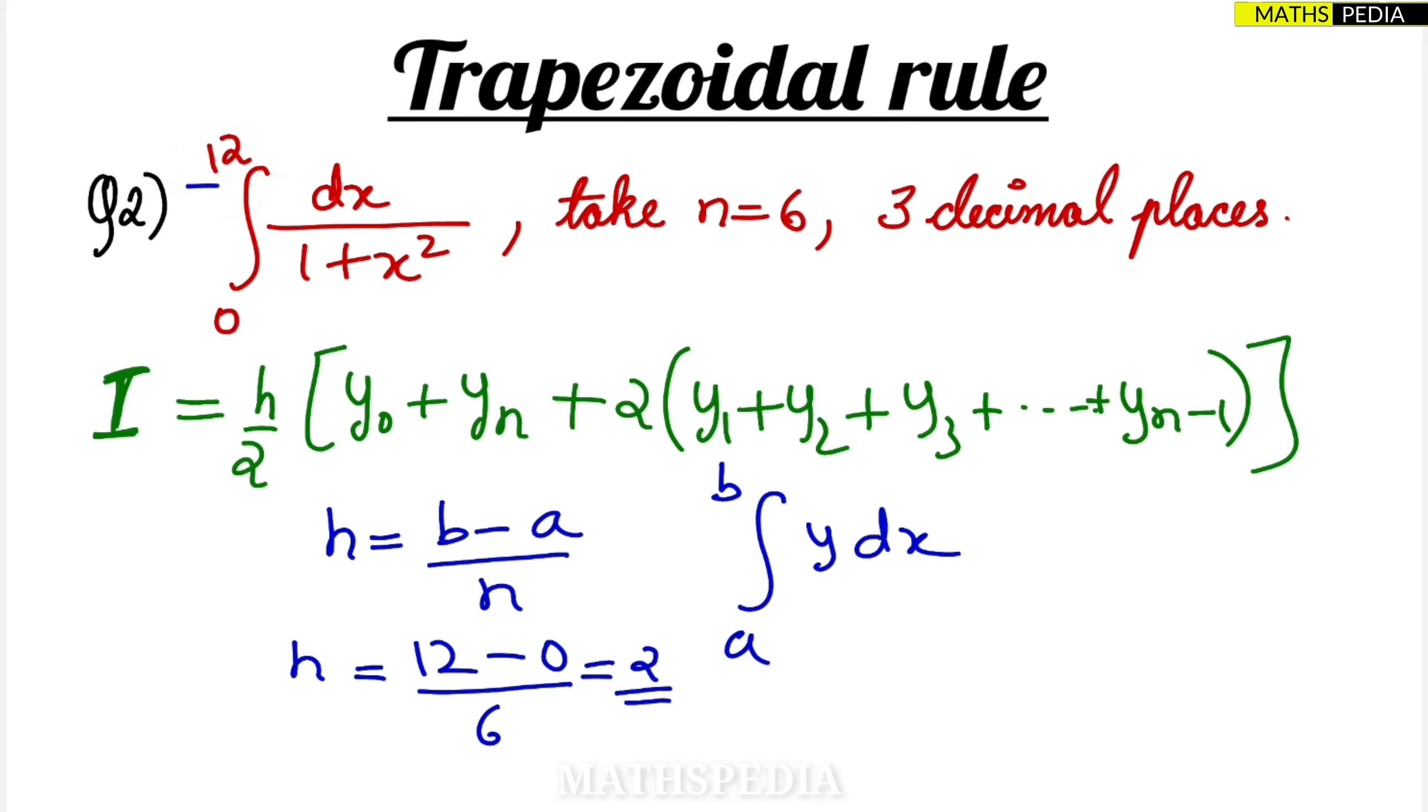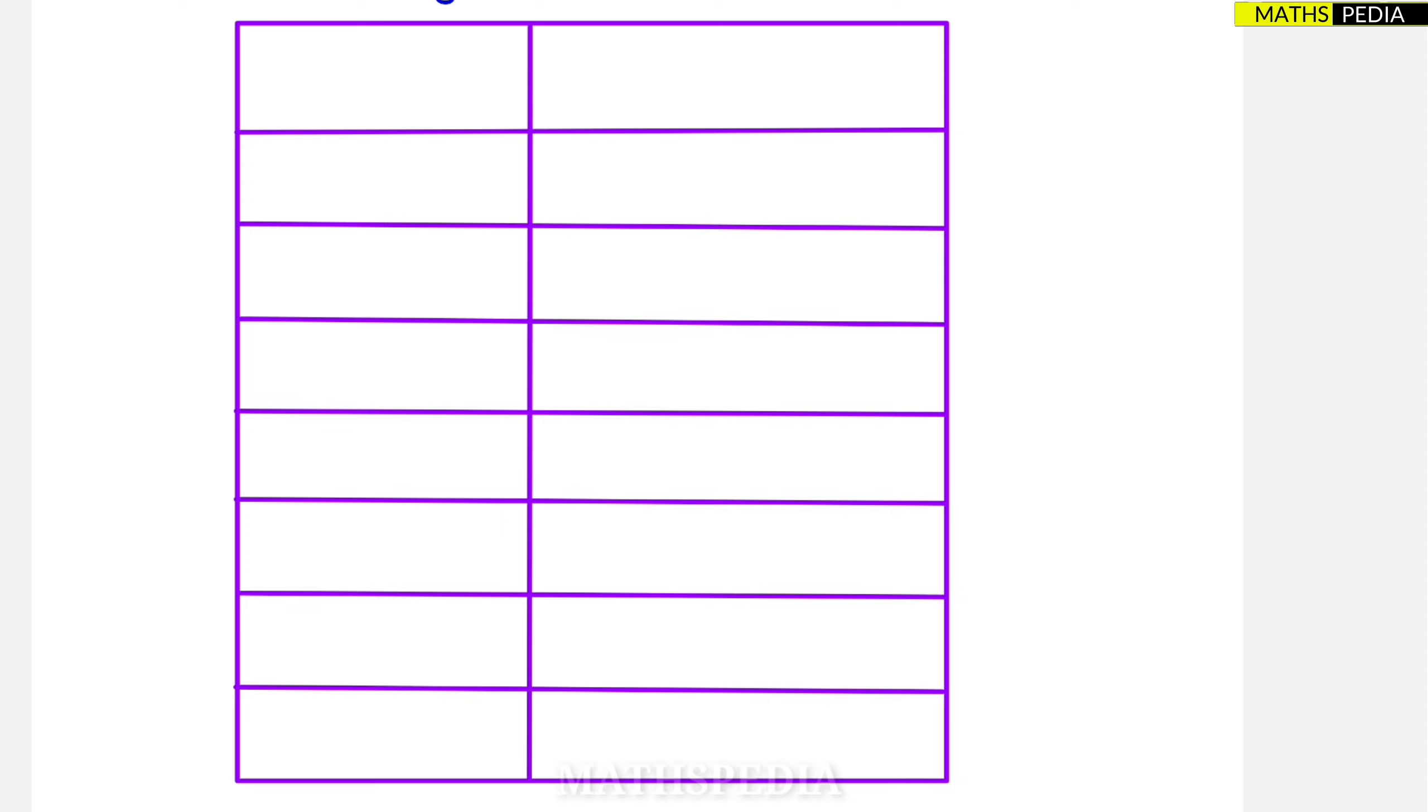So we will first form the table. First column will represent the x value, second column will represent the y value which is equal to f, which is given in the question. What was the question given? 0 to 12, 0 to 12 dx by 1 plus x square. This was the question. So that question I will paste here.